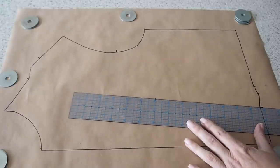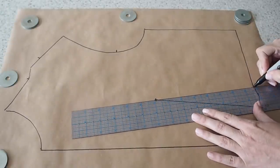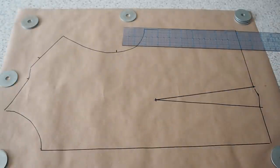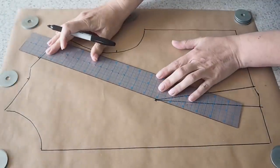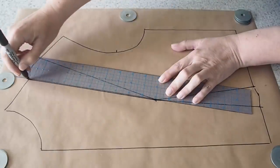And the all-important apex point. Drawing in first of all my waist dart from the waist to the apex, and then that shoulder dart from the apex to the shoulder. So that's my tracing complete.